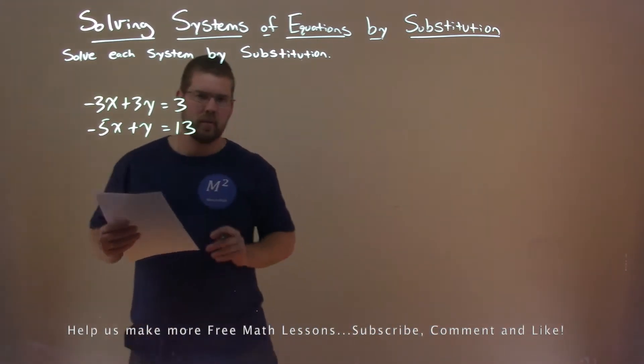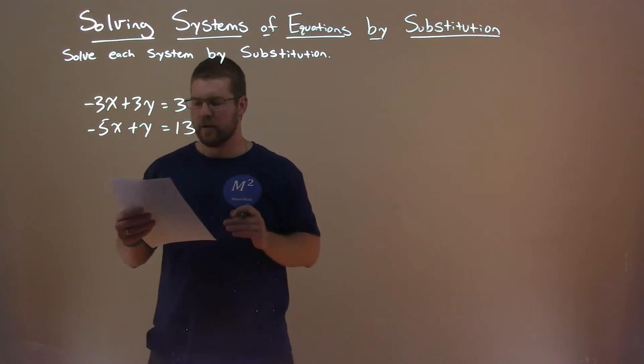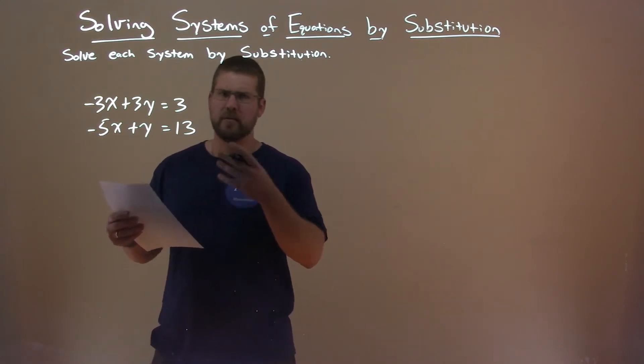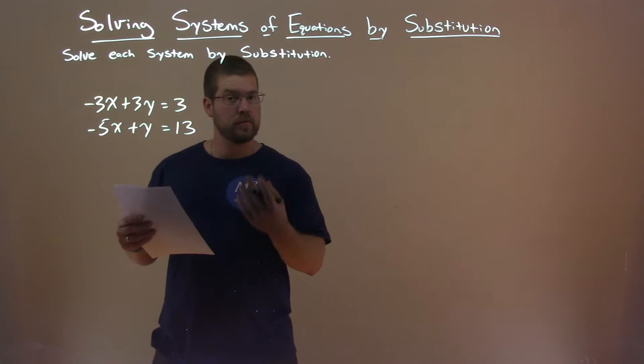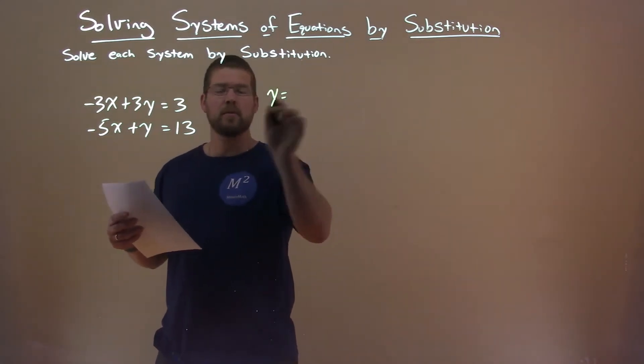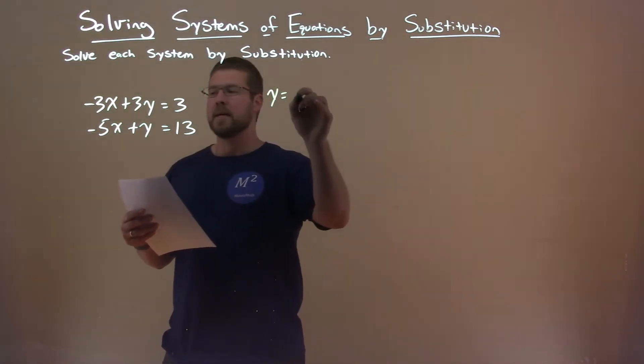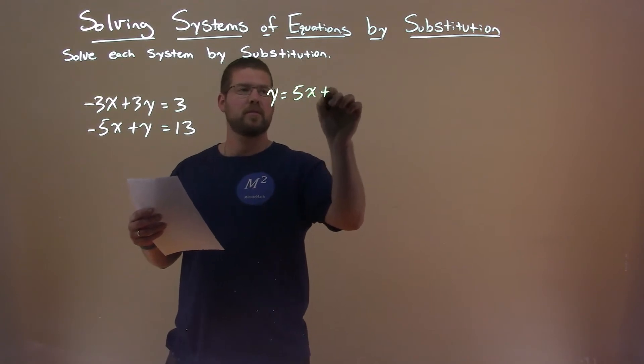I can see my second equation, I can get y by itself very easily. I have to add 5x to both sides, so I can write y = 5x + 13.